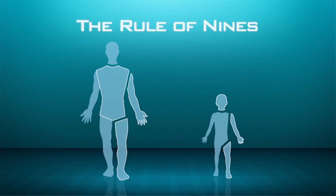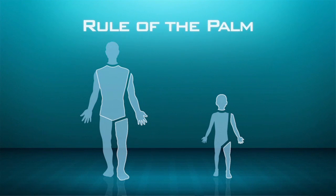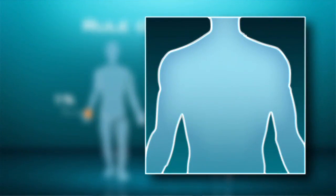One other helpful tool is something called the rule of the palm. If you look at the patient's palm, not your palm but the patient's palm, that's about 1% of that individual's total body surface area. So if you're not exactly sure, you look at the palm and put it in different areas and you can say, okay, that's a 3% burn, about three palm sizes of the patient. That's another helpful tool in determining the exact percentage of body surface area burned.